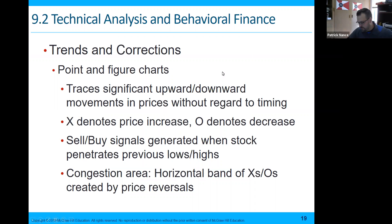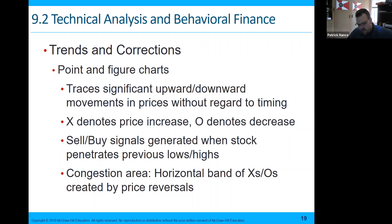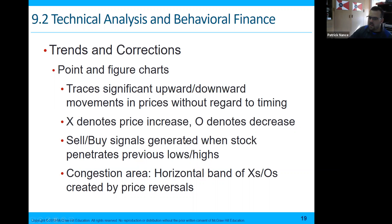Trends and corrections. Point and figure charts trace significant upward and downward movements in prices without regard to timing. An X denotes a price increase, a circle denotes a decrease, and sell and buy signals are generated when the stock penetrates the previous highs or lows. If there's a congestion area on the band of X's and O's, this creates price reversals.